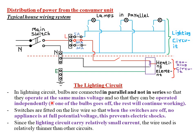If bulbs were connected in series, switching off one bulb would cause all others to go off as well. The advantage of parallel connection is that if one bulb goes off the rest continue working. Switches are fitted on the live wire so that when switches are off, no appliance is at full potential or voltage — this prevents the danger of electric shocks. All fuses must also be connected on the live wire.